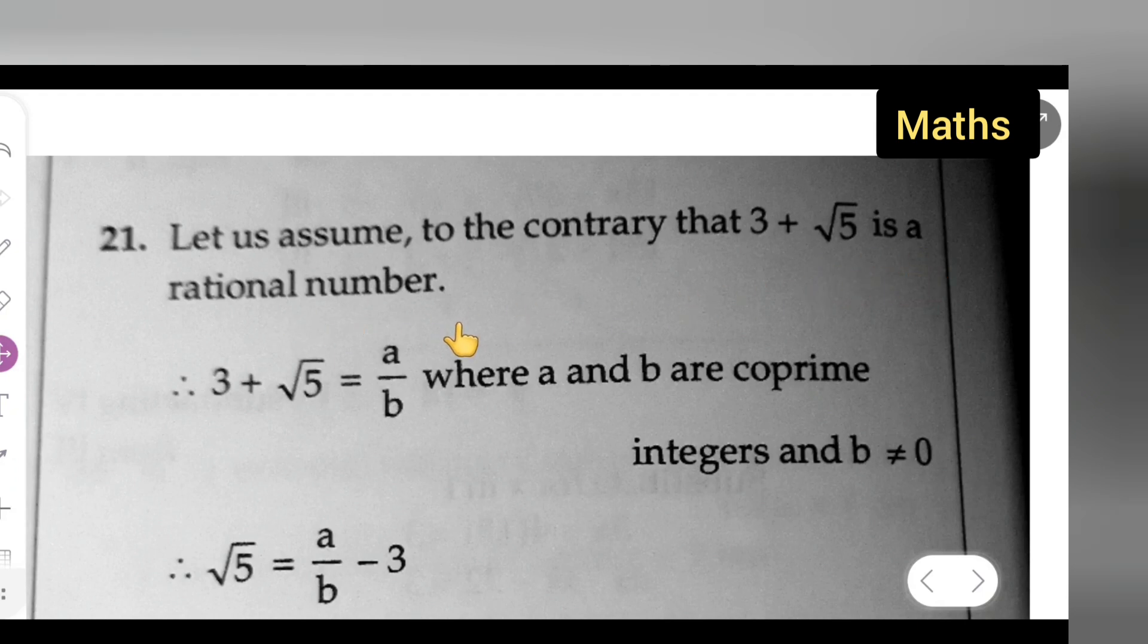So you'll have to take 3 plus root 5 equals a upon b, where a and b are coprime integers and this denominator b is not equal to 0.